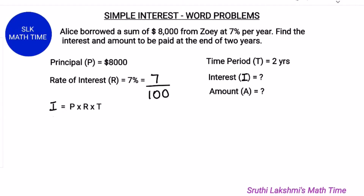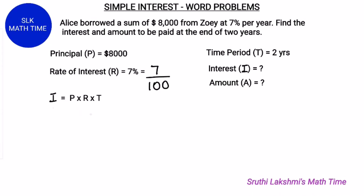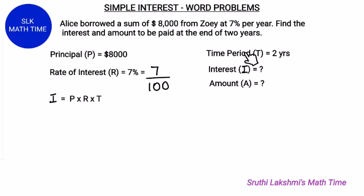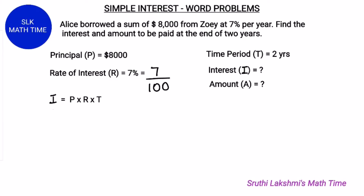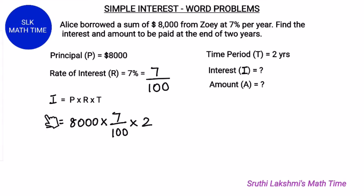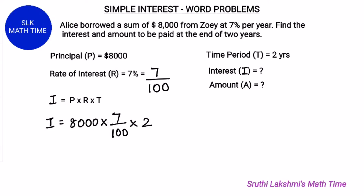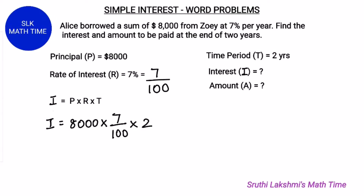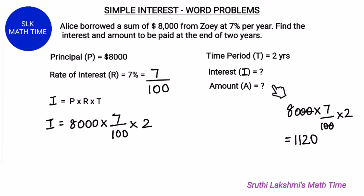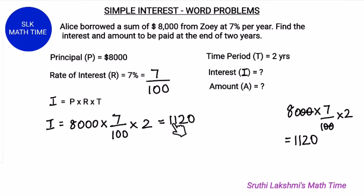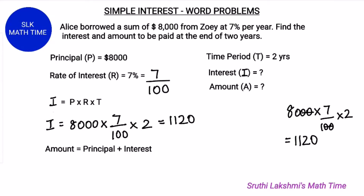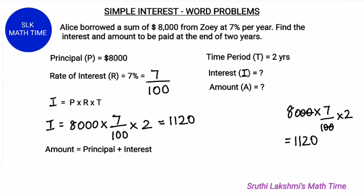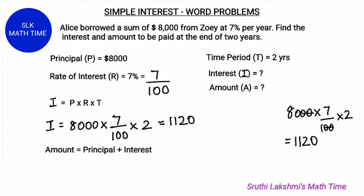The formula to find the interest is P into R into T. Here we know the principal, the rate of interest, and the time period, so it will be easy for us to find the simple interest. Let's substitute: I = $8000 into 7 by 100 into 2. When we simplify this we get $1120. So the interest is $1120.